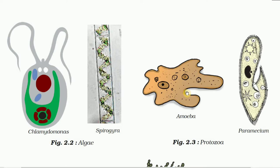Protozoa - examples are amoeba and paramecium - are nothing but unicellular living microorganisms. Some of them live independently while most live as parasites like a virus. Many parasitic protozoa cause disease in plants, domestic animals, and human beings.